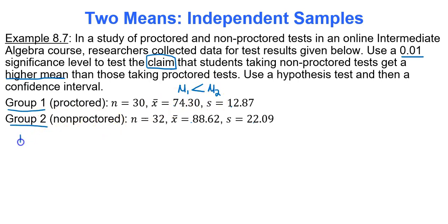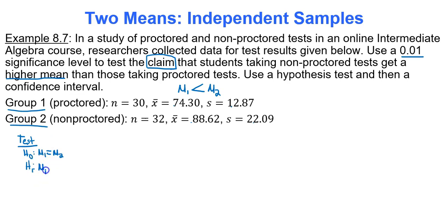The null hypothesis is always that the two means are equal to each other. The alternative hypothesis — which is the claim — is that the mean for group 1 is less than the mean for group 2. Group 1 is proctored, group 2 is non-proctored.